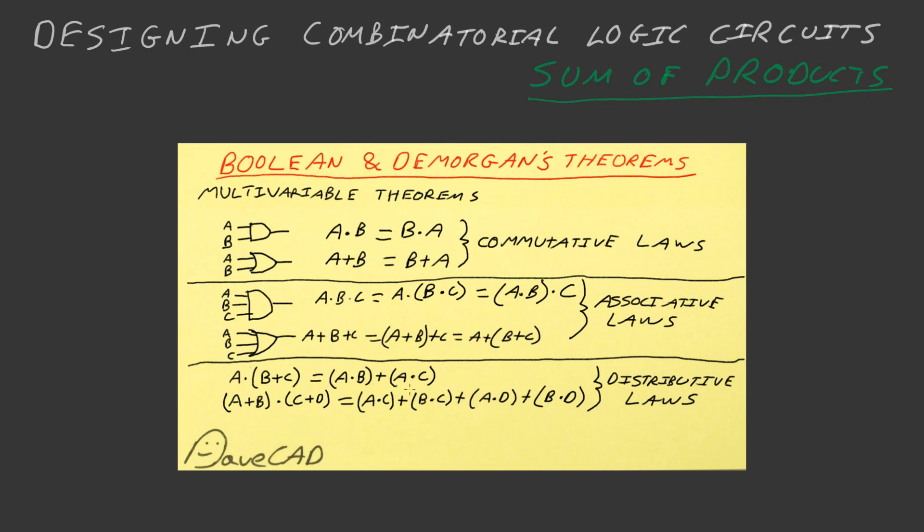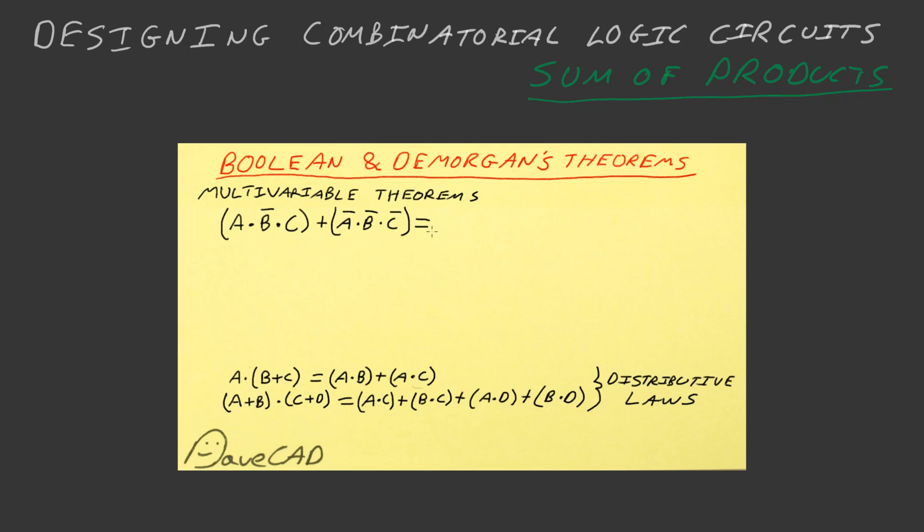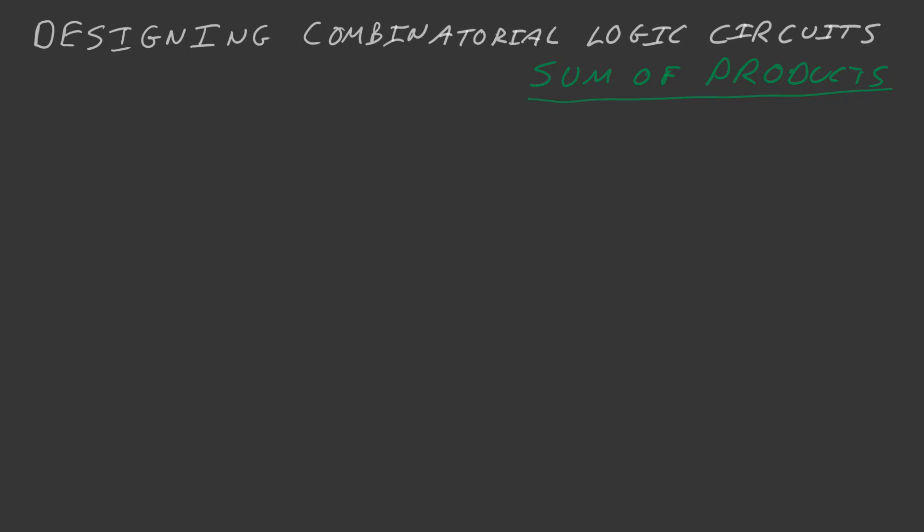But we didn't really look at how do we actually create a practical digital logic circuit based on the truth table. So that's what we're going to take a look at today - designing combinatorial logic circuits, or how to convert a truth table into digital logic to perform the function that you intend when you're designing a system.